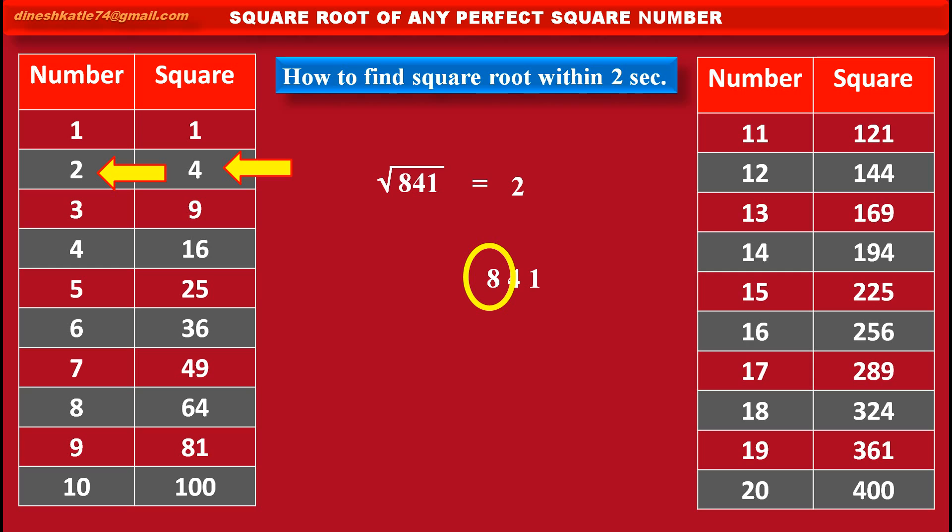Now, we have to find second digit of the answer, which depends on the last digit of the given number. This digit 1 is available at the unit place of square of number 1, that is 1, and square of number 9, that is 81.